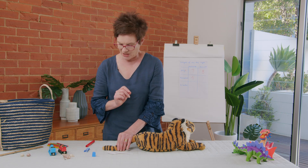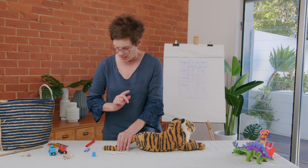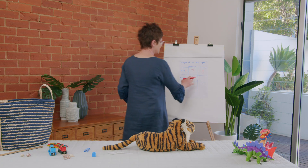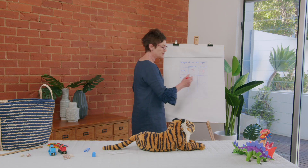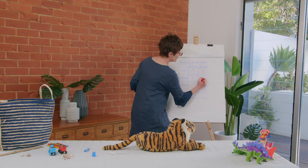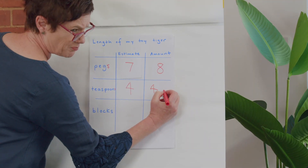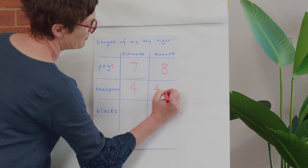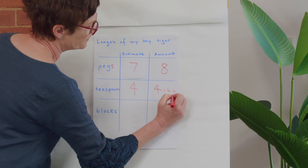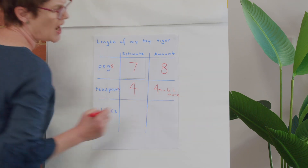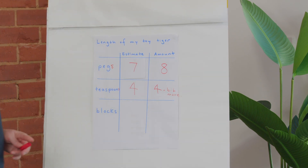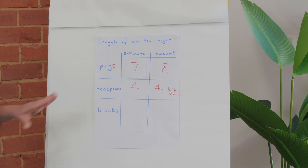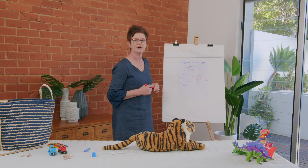Four — it's just a little bit short of the end, so I'm going to record that as four and a bit more. I'm not quite sure what that will be, but my estimate was very good. Let's write that down as four and a bit more and keep going.